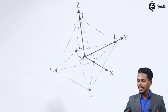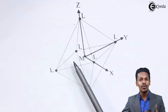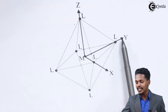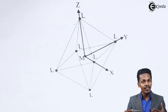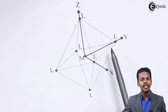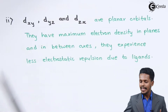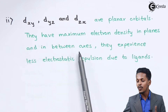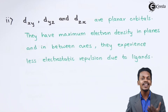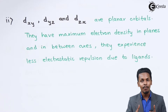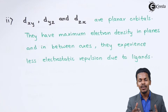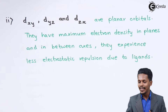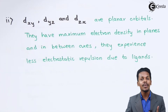The dz² and dx²-y² orbitals have electron density on the axis, and since the ligands are approaching the metal through the axis only, they will experience more repulsion, and that is how the energy will be higher for these orbitals. The dxy, dyz, and dzx orbitals are planar orbitals with maximum electron density on the plane and in between the axes. They experience less electrostatic repulsion because the ligands are not approaching through the plane, so the electron density of these orbitals will not repel as much with the ligands.